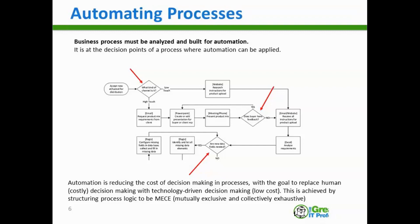The key takeaway here is that automation operates at the process design level. It's about understanding decisions and where they appear in your processes, then managing them down to lower-cost resources and ultimately technology. That is what it means to automate a process.